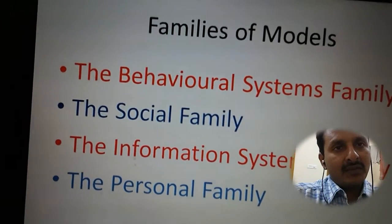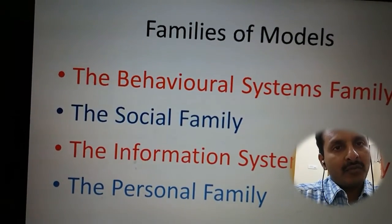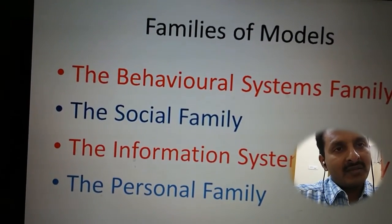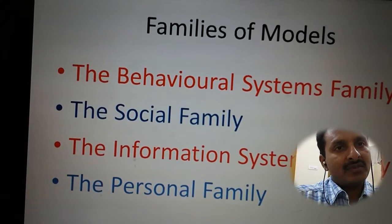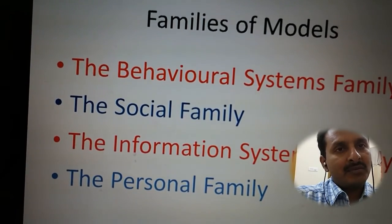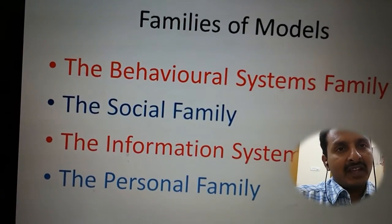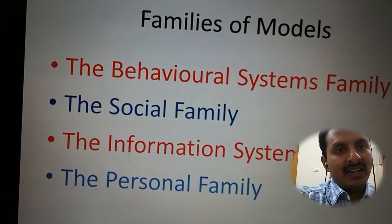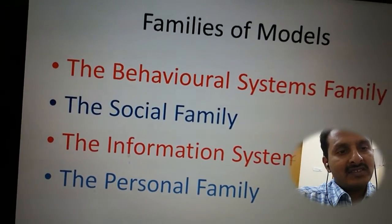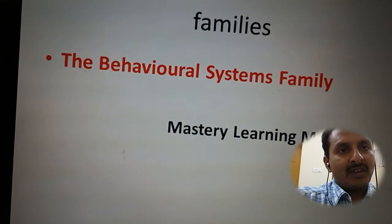So these are the four families or types of models. The models are of four types and these types are called families. They are: behavioral systems, social family, information systems, and personal family.